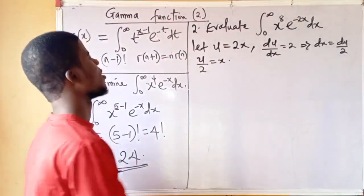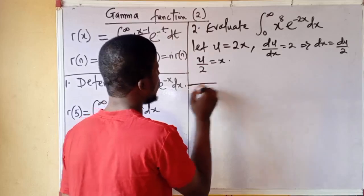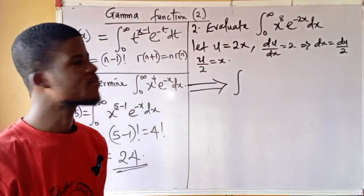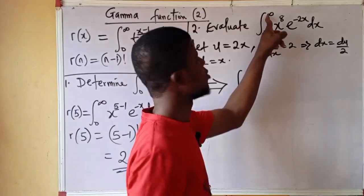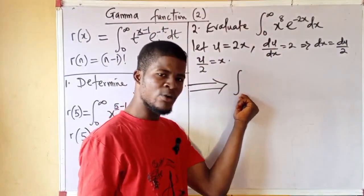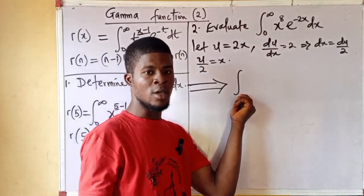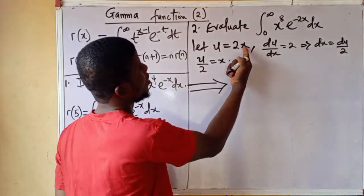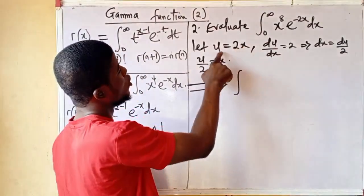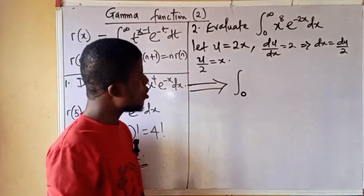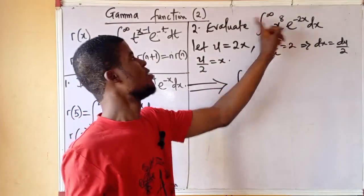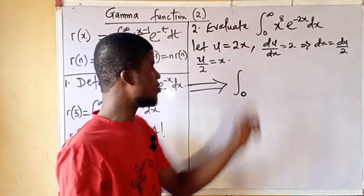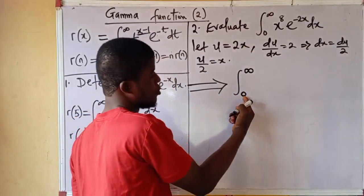Let's modify the integral now. A quick check: when x is 0, u is 2 times 0 which is 0; when x is infinity, u is 2 times infinity which is also infinity. So the new integral still runs from u equals 0 to u equals infinity.